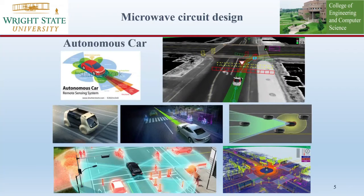The second example is the autonomous car, which relies on remote sensing systems. This remote sensing system allows the car to sense surrounding traffic. This sensing system also operates in the microwave frequency range, thus this remote sensing system also belongs to microwave technology.